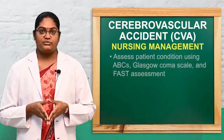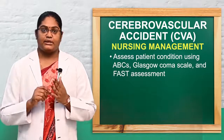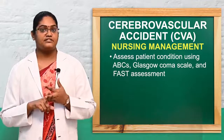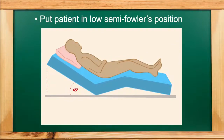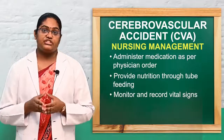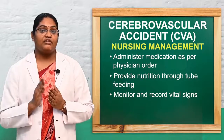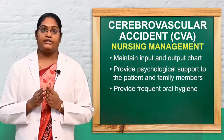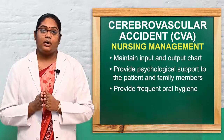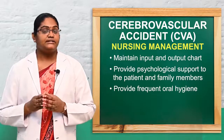For nursing management, assess the patient's condition using ABCs, Glasgow Coma Scale, and FAST assessment. Provide a comfortable low semi-Fowler's position to decrease intracranial pressure and facilitate oxygen supply. Administer medications as per physician's order, provide nutrition through nasogastric tube feeding, and closely monitor vital signs — reporting any abnormalities. Monitor intake and output, provide psychological support, maintain oral hygiene for unconscious patients, and provide health education to family members.